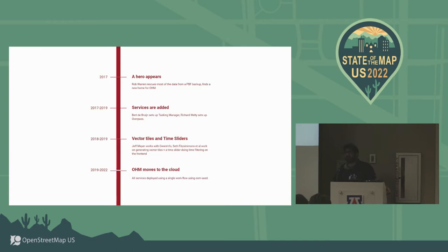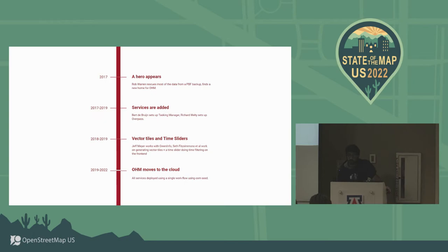I somehow got involved with the project again. I was working with Seth Fitzsimmons on something else, and he said, oh, I'm going to an OHM call. I said, I used to have root on that box once — let me join this call. I could see it was struggling to figure out the optimal architecture to get this running in a way that was sustainable and allowed updates — appropriate for 2019. So in 2019, OHM moved to the cloud where we deployed the new infrastructure along with the time slider.